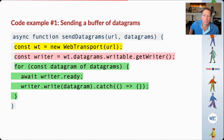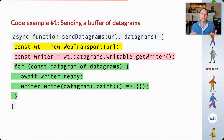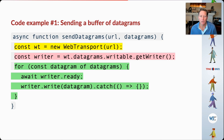I'm going to show you four code examples. You may not write code yourself, but even if you don't, you can take away the notion that it's a relatively simple API exposing quite powerful features. In our first example, we want to send a buffer of datagrams. In the yellow code block, I instantiate my Web Transport connection. In the pink block, I wait for a writer on the datagrams object, and once the writer is available, I loop through my datagram array and write the datagrams into that writer — relatively simple.